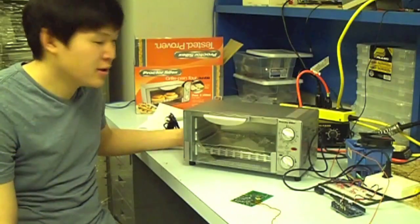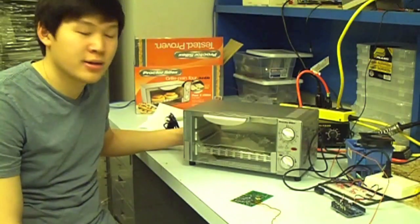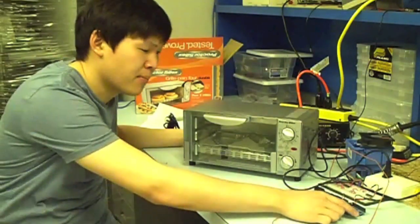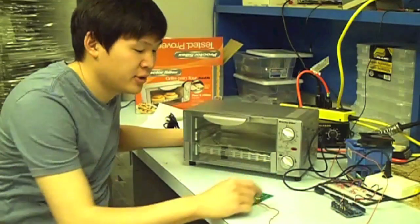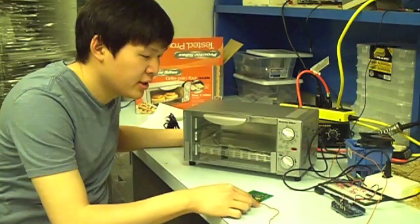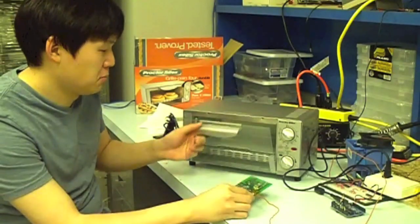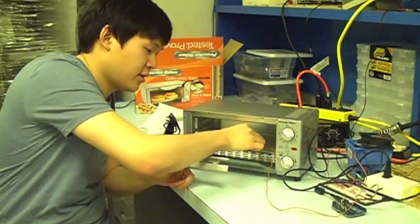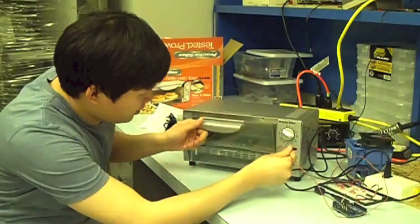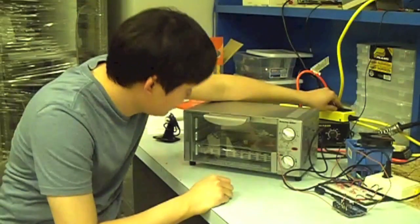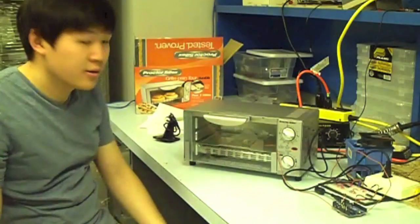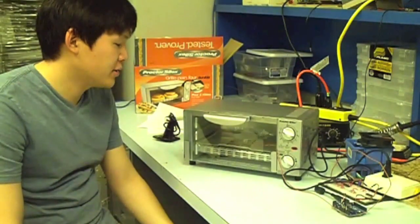Hi, I'm Chris. This is our homemade reflow oven setup. It consists of a microcontroller and a temperature sensor, which uses this thermocouple to control the temperature and the power on this oven. And here's our board going in. And that's it. After five minutes, it should be done.